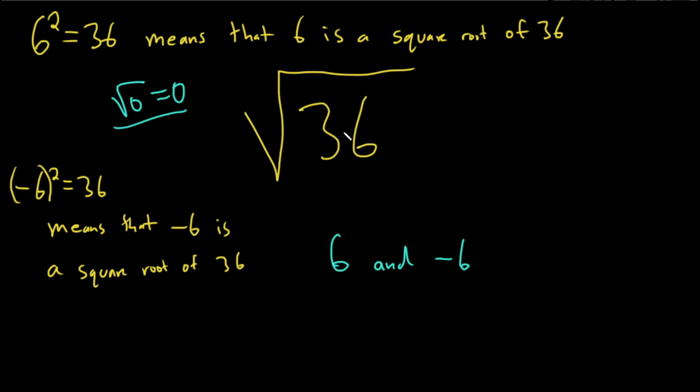So when you see this, when you see a positive number, what's the positive square root of 36? Just 6. So we get one answer.